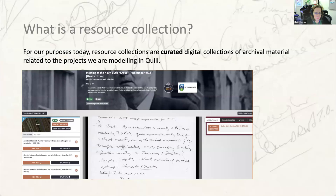Those are the considerations we're going to be thinking about today. There are two main types of resource collection in Quill. In one, the image of the archival material is hosted directly in Quill. But if we do not have the rights to the image, we might instead display a link to an image hosted elsewhere.